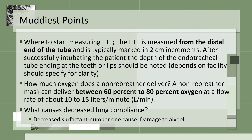How much oxygen does a non-rebreather deliver? It delivers between 60% to 80% at a flow rate of 10 to 15 liters. It needs at least 10 liters to fill up the bag portion for the device to function properly.